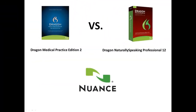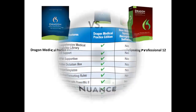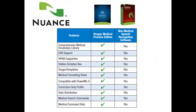Dragon Medical Practice Edition 2 is finally here and is more accurate and efficient than ever before. You may be wondering what the differences are between NaturallySpeaking Professional 12 and Dragon Medical Practice Edition 2. NaturallySpeaking Pro 12 has professional advantages over Premium 12, such as the ability to create advanced time-saving macros, dictate over a network, and utilize a professional digital recorder. Dragon Medical Practice Edition 2 also has these perks but adds the following.